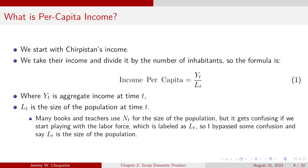If we look at aggregate incomes, Derpistan is clearly the richer country. But if we look at income per capita, Chirpistan is a much better place to live. Let's take their income and divide it by the total number of inhabitants. The formula is Y divided by L, where Y is aggregate income at time T and L is the population at time T. A lot of books and teachers use a capital N for the size of the population, but it gets confusing when we start dealing with the labor force, so I use L as the size of the population.